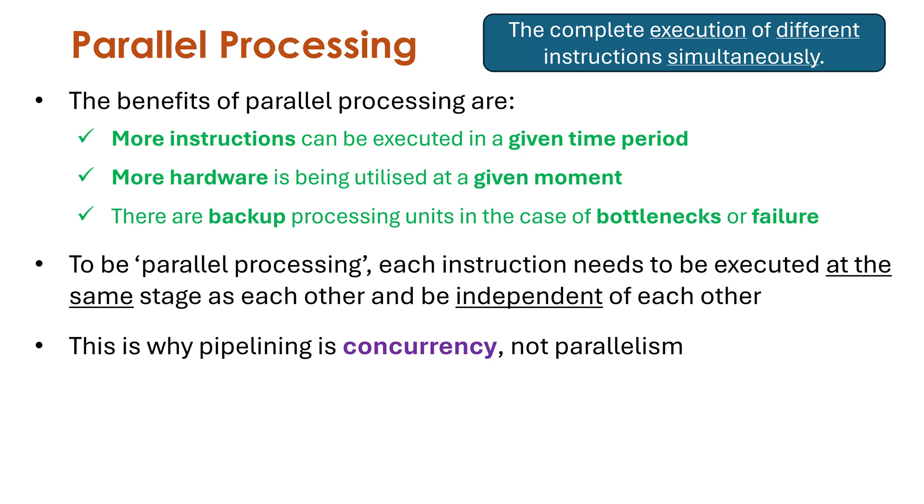Technically speaking, pipelining is an example of concurrency, and concurrency and parallelism are similar but slightly different terms. Arguably parallelism is an example of concurrency, but concurrency is when we have multiple instructions executing in overlapping time periods. This diagram I've shown before with the pipelining video, are they being executed at exactly the same stage as each other? No.